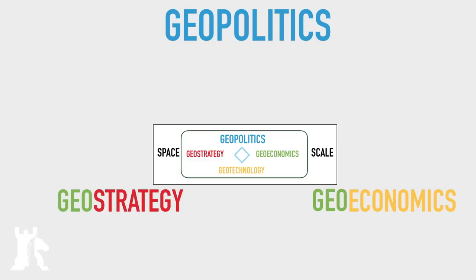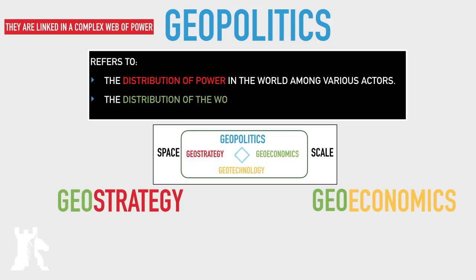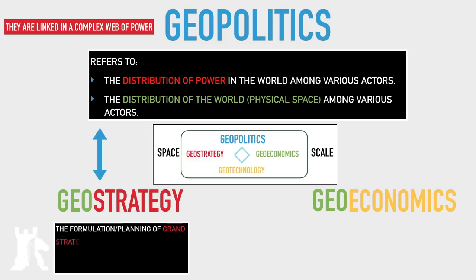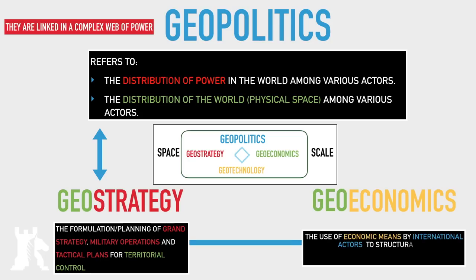Fundamentally this is how you have to understand politics in the modern era. These various dimensions of power are linked together in a complex web — and what a web is, is a net: if you pull one aspect of this web it affects all the other aspects; if you ignore one aspect it will have a detrimental effect on others. Geopolitics, like I said, is about world power distribution — it refers to two aspects: distribution of power amongst various actors in the international system, and distribution of the world's physical space itself — how much territory and what territory these actors control. Geopolitics is mutually dependent and linked in a complex web of power with geostrategy.